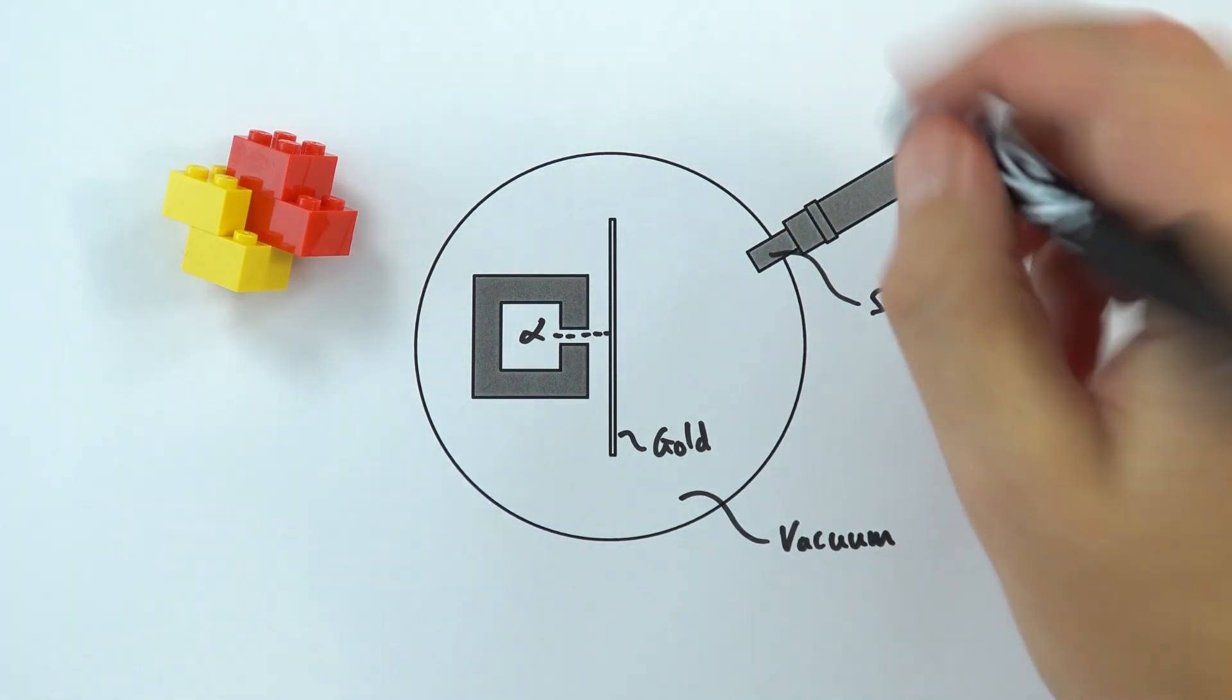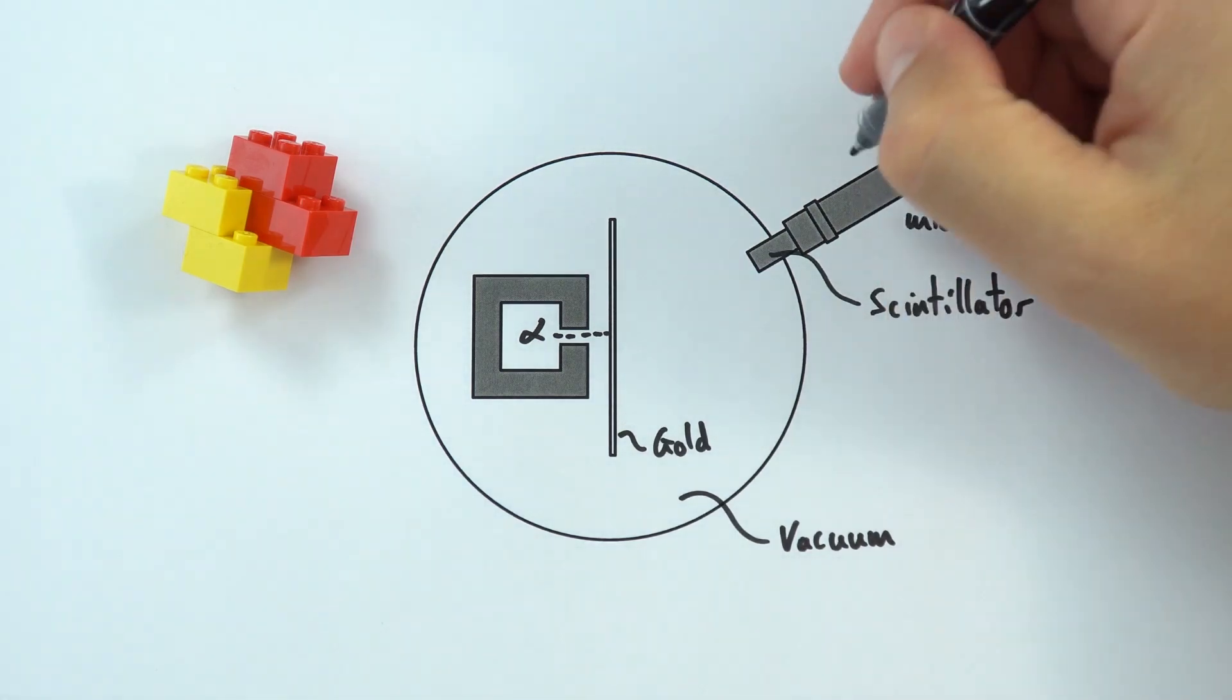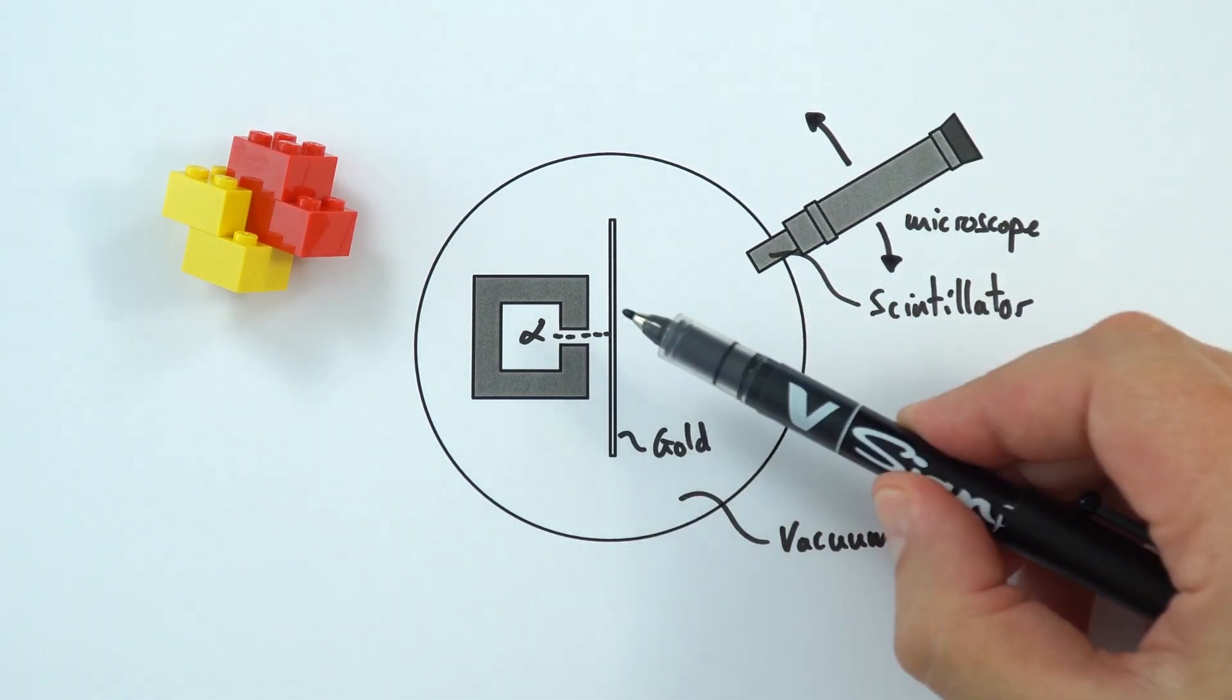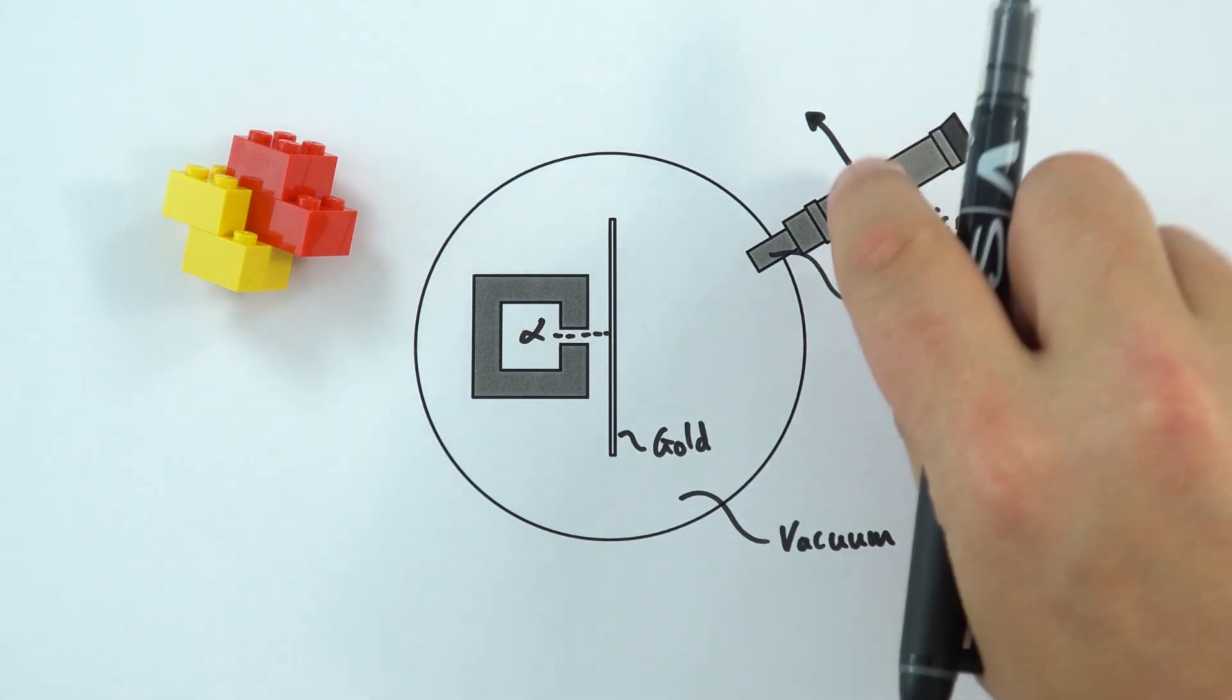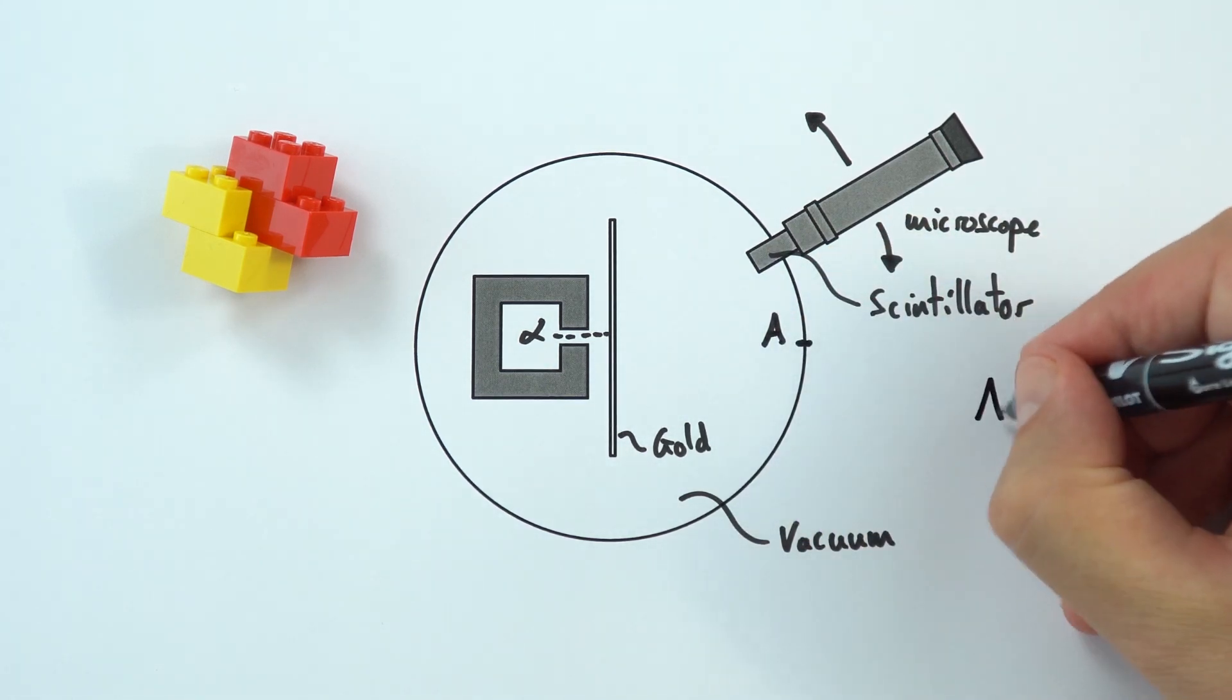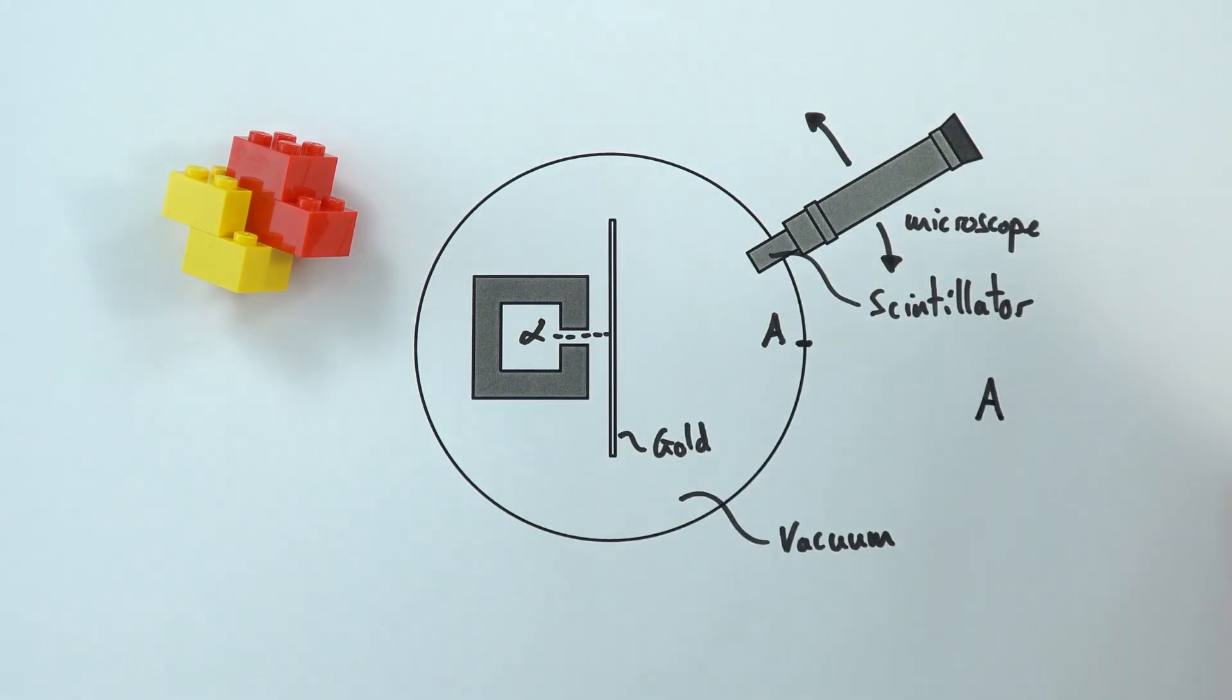And the other thing about this microscope was that they could rotate it around the central part here. So this microscope would rotate 360 degrees. Now what they expected to find was if you fire alpha particles at the gold that should stop it. But actually they found that when they had the detector at this position, so I'm going to call this position A, when they had the microscope and the detector there they found that at A loads and loads of this radiation came through as if that piece of gold foil wasn't there at all.